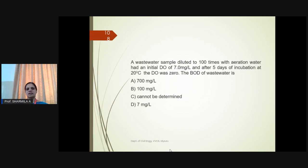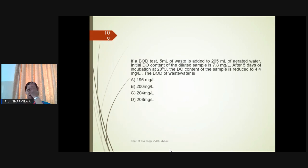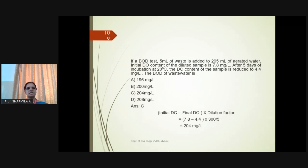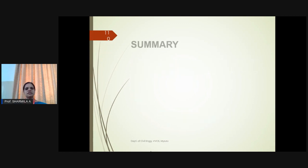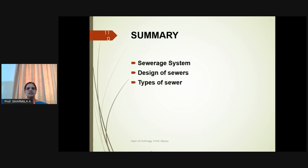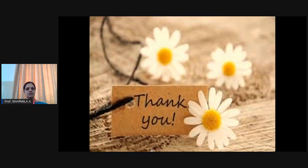If a wastewater sample is diluted 100 times and the initial DO is 7 mg/L and after 5 days incubation it is 0 — this cannot be determined as the DO has gone to zero, meaning all oxygen was depleted before the test ended. BOD test problem: 5 mL of waste is added to 295 mL of diluted water; initial DO of diluted sample is 7.8 mg/L; after 5 days at 20°C, DO is reduced to 4.5 mg/L. BOD = (initial DO − final DO) × dilution factor = (7.8 − 4.5) × (300/5) = 198 ≈ 204 mg/L. Summary: We learned about sewerage systems, design of sewers, types and shapes of sewers, characteristics of wastewater, and BOD calculations. Thank you, we'll meet in the next session.